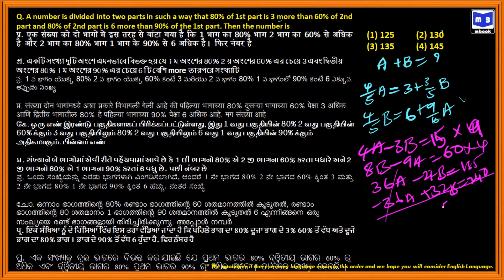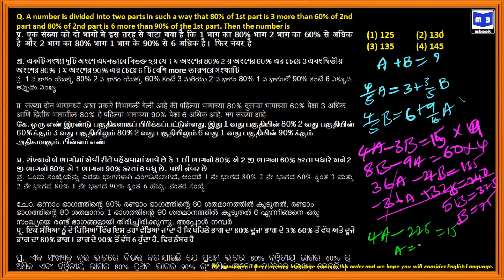Solving the equations, B is equal to 75. Substituting back: 4A minus 3 times 75 equals 15, so 4A equals 15 plus 225, giving A equals 60. Therefore A plus B equals 60 plus 75, which equals 135.